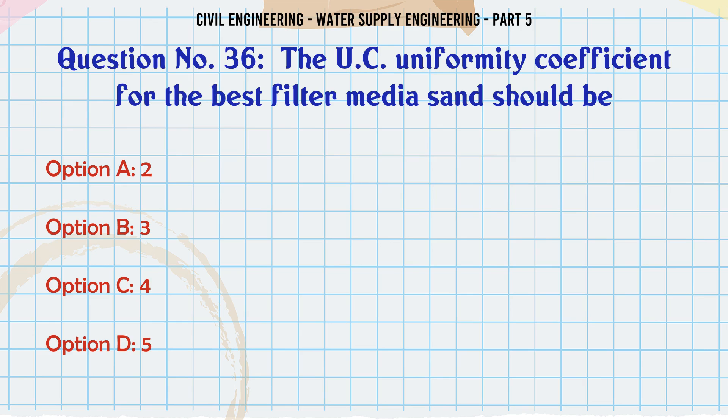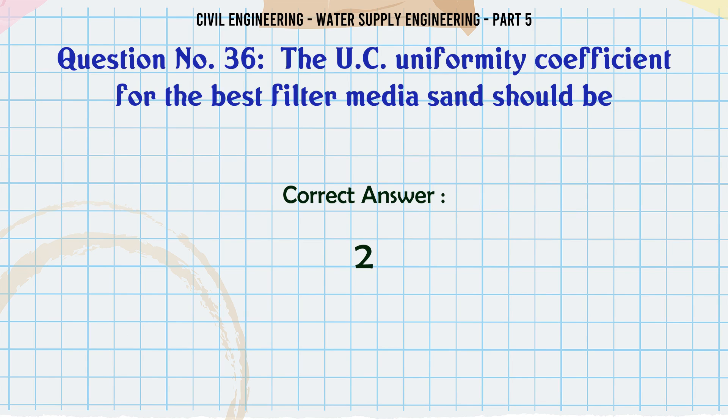The uniformity coefficient (UC) for the best filter media sand should be: A. 2, B. 3, C. 4, D. 5. The correct answer is 2.